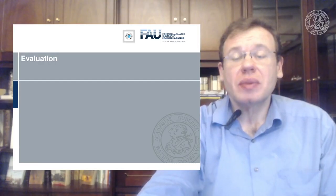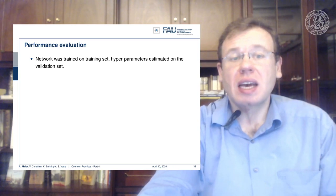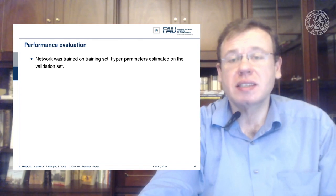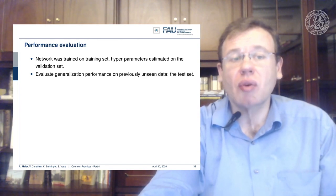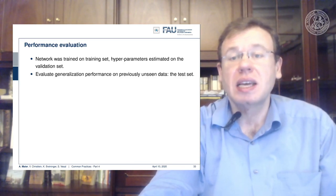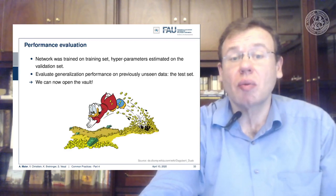Machine learning is the science of sloppiness really. So of course we need to evaluate the performance of the models that we've trained so far. Now we have set the training set and the hyperparameters, and now we want to evaluate the generalization performance on previously unseen data — the test data. It's time to open the vault.